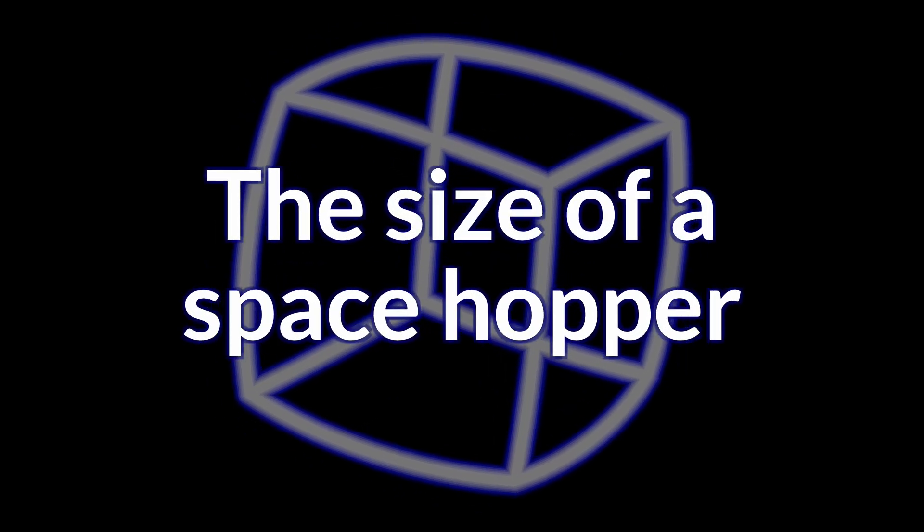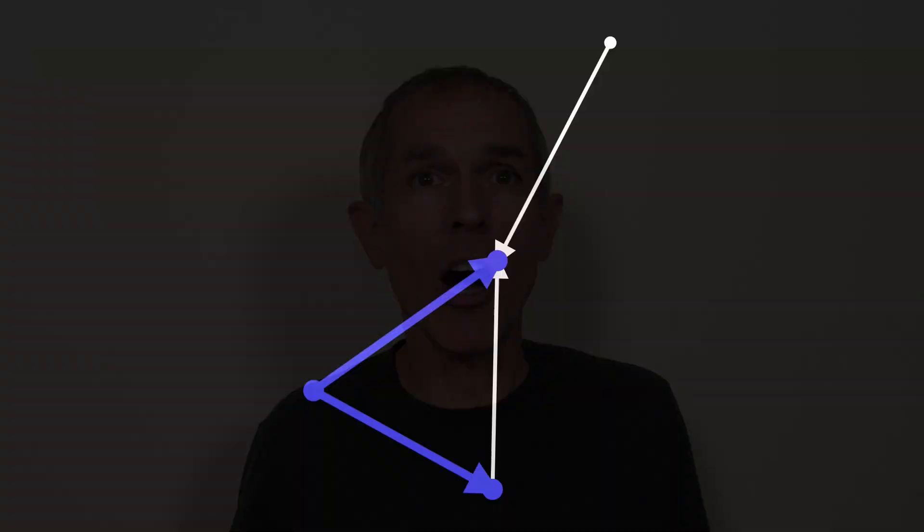Rather than adopt the stance of the monkey with its hands over its eyes and insist that if I can't see it, it's not there, let's suppose that there is a computer that runs the universe and ask a simple question: how big would it have to be? According to Wolfram physics, the universe is a graph of nodes and edges. It's hard to estimate the scale of the graph. Space doesn't exist independently of the nodes and edges — space is the nodes and edges.